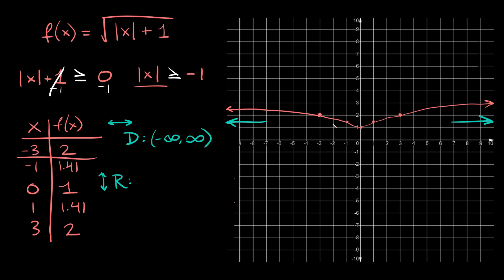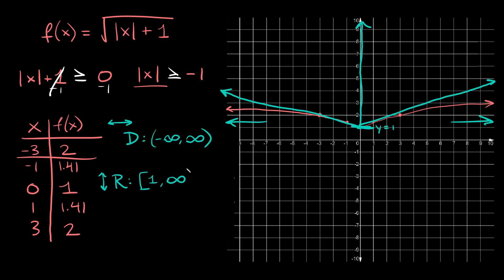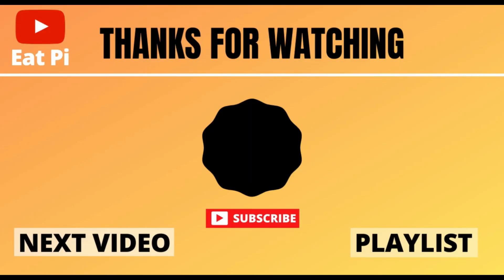The range represents our y value limits — up and down. The lowest point on this graph is at y = 1, and the graph rises little by little going outward in both directions toward positive infinity. So the lowest point is positive 1, which we include, giving a bracket around 1, and then it goes up toward positive infinity. So the range is [1, positive infinity).